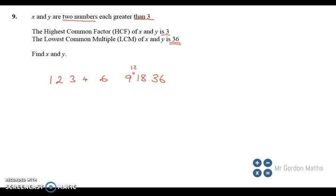So let's see if we can find a couple of numbers that are greater than 3 and have a highest common factor of 3. These are all numbers that go into 36. Which ones have a highest common factor of 3?